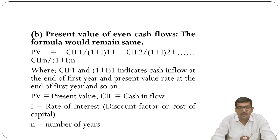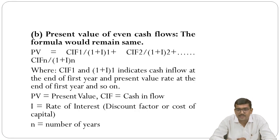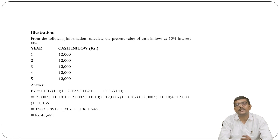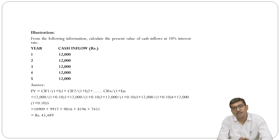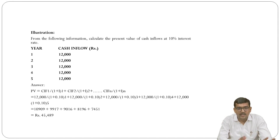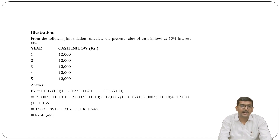For the present value of even cash flows, when the cash flow is the same each year, the same formula applies. Illustration: Cash inflows at 10% for years 1 to 5 are ₹12,000 each year. Applying the formula, the total present value = ₹45,489. The formula is the same as for uneven flows; since the amounts are equal, the answer differs from the uneven case.